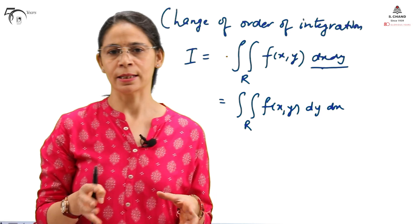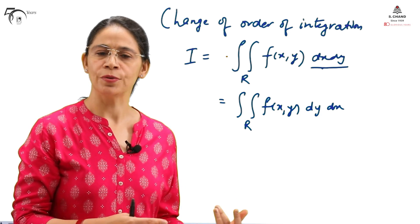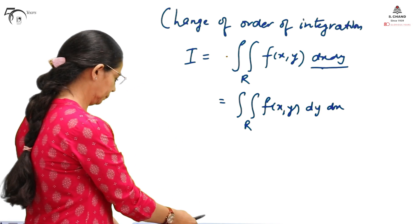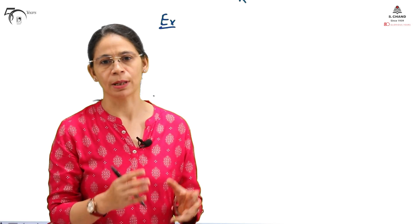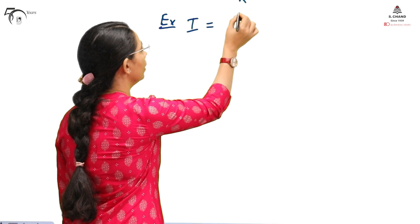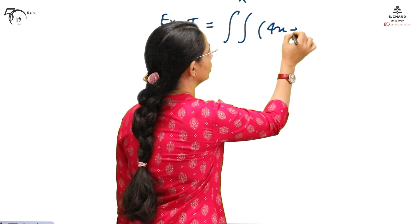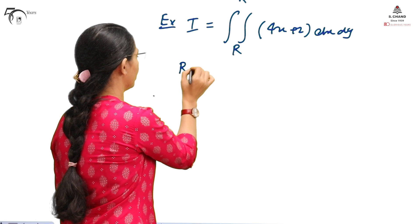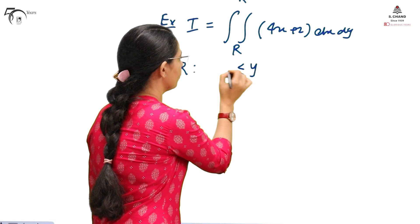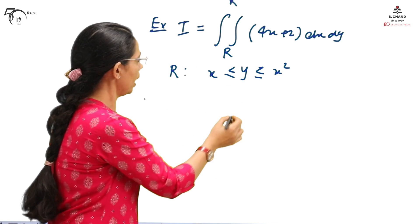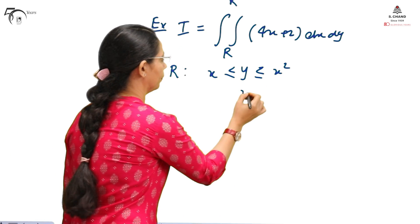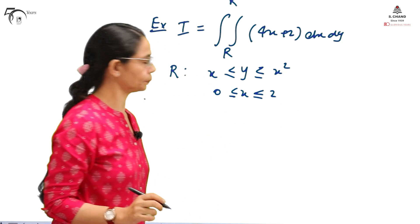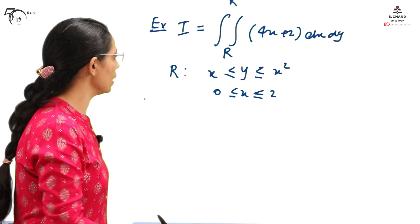It is very much required when we have a non-rectangular region of integration — that is when it is very helpful. Let me take one example where we will change the order of integration and integrate the same function over that region, and we will see that we get the same results. We will compute this integration I. The function given is f(x,y) = 4x + 2, and the region of integration has y going from x to x², and x moving from 0 to 2. First we need to sketch the region of integration.